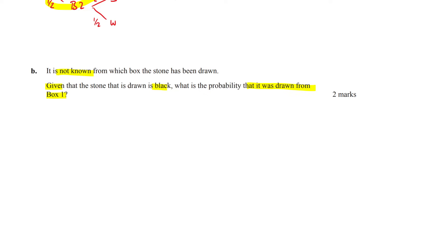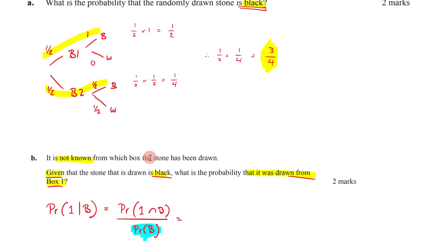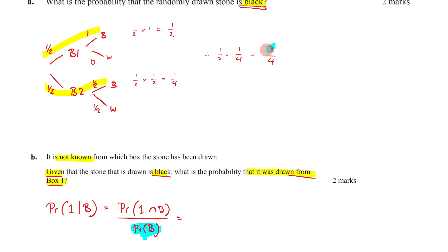And we're told that it's given that the stone being drawn out is black. What's the probability that it was drawn from box one? So what's the probability that it's box one given that it's black? So one given black. We know that this is going to be the probability of one intersection of B over the probability of B. Well, we've already figured out the probability of pulling a black stone, haven't we?